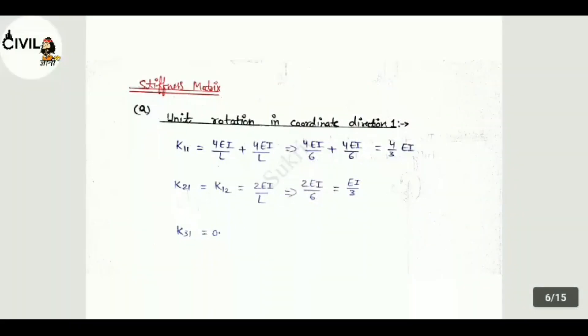Next step is to develop the stiffness matrix. For this, first we apply unit rotation in coordinate direction 1. This gives values of K11, K21 and K31. K11 means force at 1 due to unit displacement at 1. We have applied unit rotation at first point. Now B affects BA and BC. So K11 will be 4EI/L plus 4EI/L. B to A distance is 6, so 4EI/6 plus B to C distance is 6 plus 4EI/6. So K11 equals 4/3 EI. K21 equals K12, this will be 2EI/L, further equals EI/3.